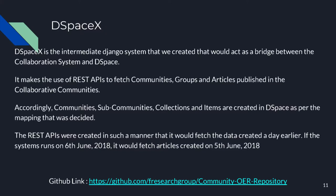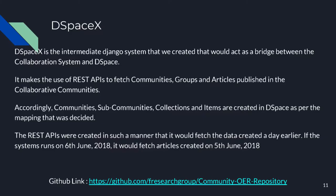Details about the app will be explained now. For effective communication between the collaborative communities portal and DSpace, we created the DSpaceX app. Our app takes articles in JSON format and posts them into DSpace using the REST APIs already provided in the collaborative communities. By calling these APIs, we get all the communities, community articles, groups and group articles in JSON format — specifically those published or created the day before. For example, if the app runs on 6th June 2018, it will fetch all content created on 5th June 2018.